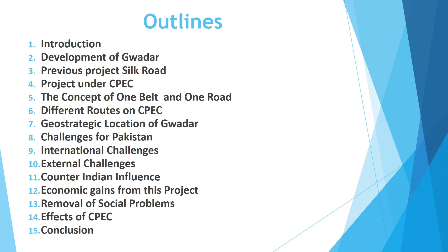The fifth outline is the concept of One Belt and One Road, under which I will try to share information in detail. The sixth one is different roads on CPEC, and the seventh is the geo-strategic location of Gwadar. The eighth is challenges for Pakistan, the ninth is international challenges, and the tenth is external challenges. At number eleven, counter-Indian influence; number twelve, economic gains from this project; number thirteen, removal of social problems; number fourteen, effects of CPEC; and finally, the conclusion.